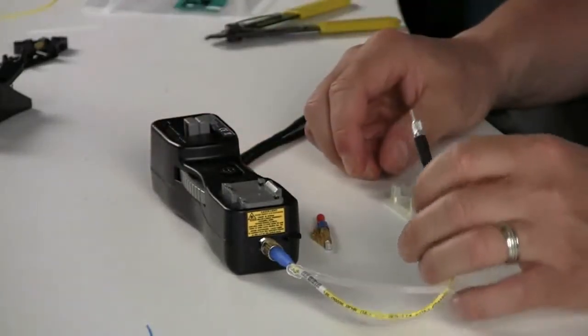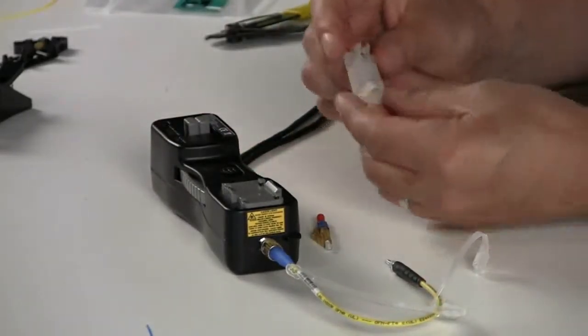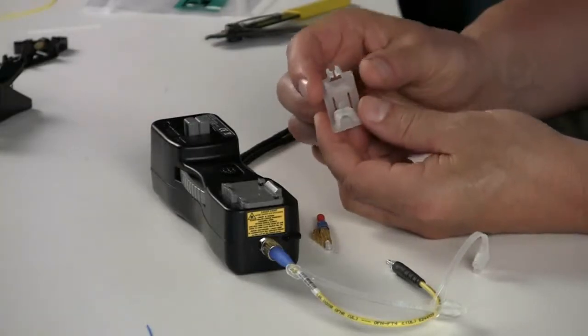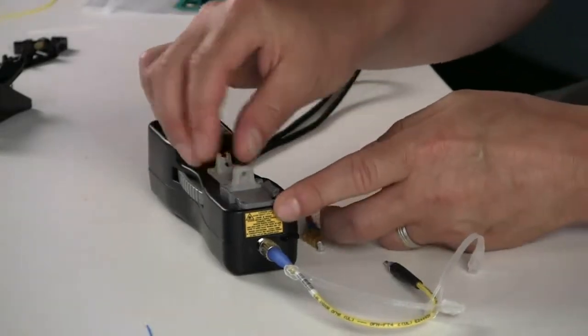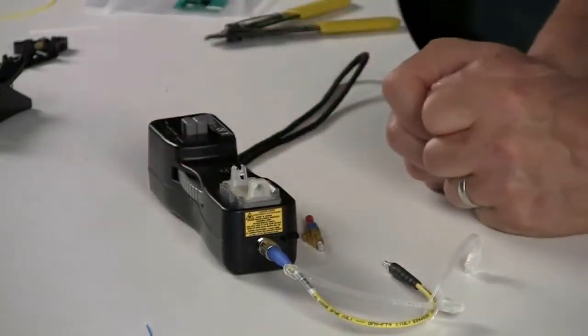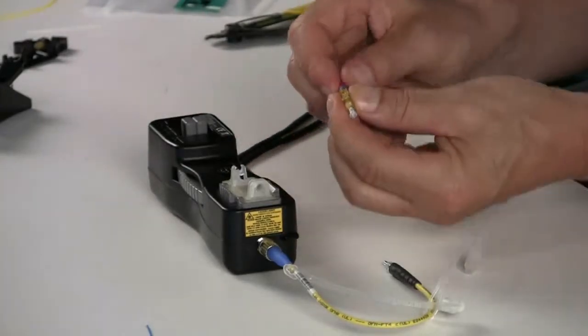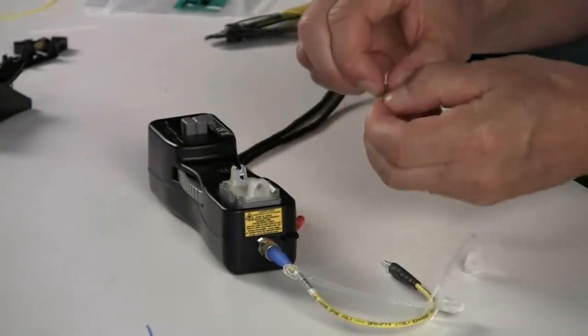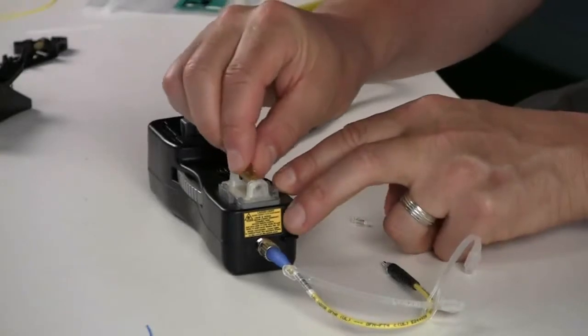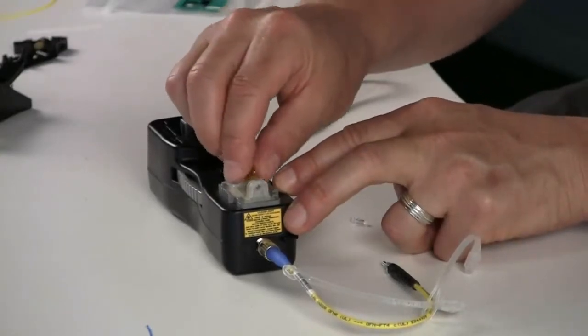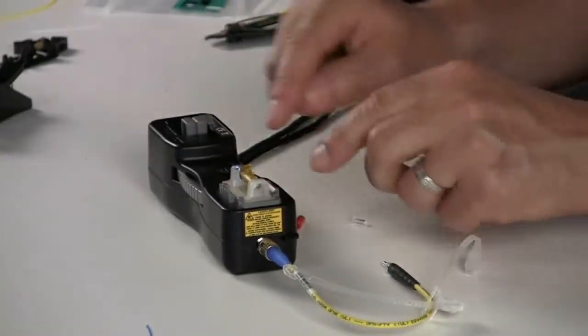The LC portion then goes into the connector portion. The LC sled slides into the cradle. The LC connector then slides into the cradle and pops into place.